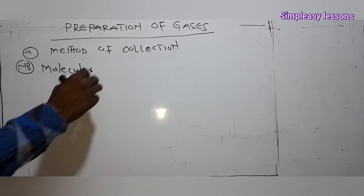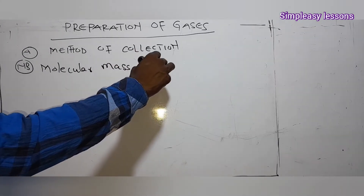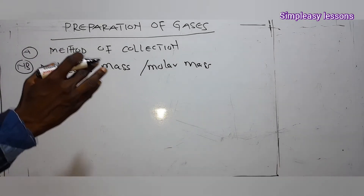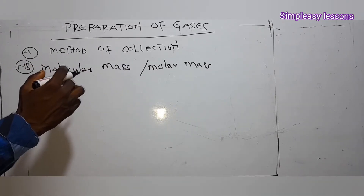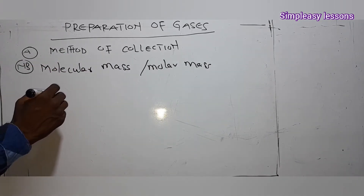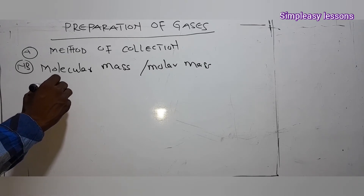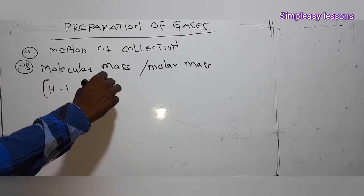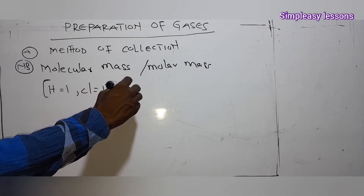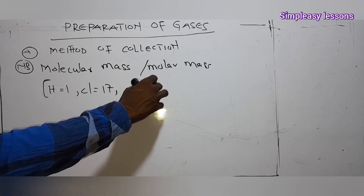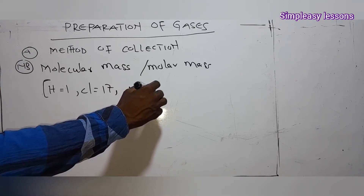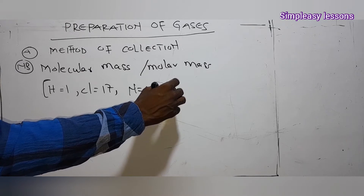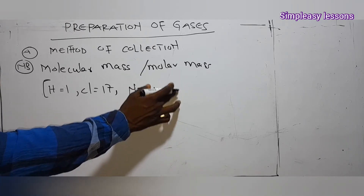When you talk of molar mass, we are looking at the summation of the individual atomic masses. For instance, the molar mass of hydrogen is 1, chlorine is 35.5, nitrogen is 14, carbon is 12, and oxygen is 16.